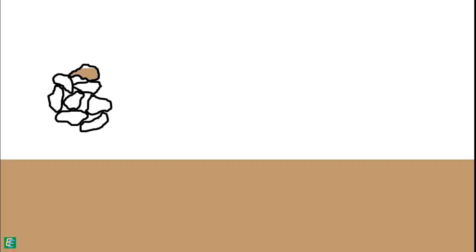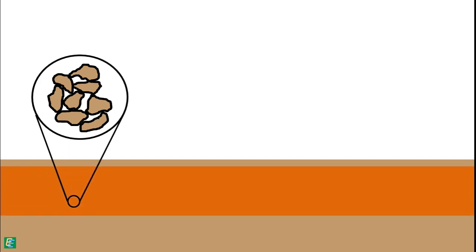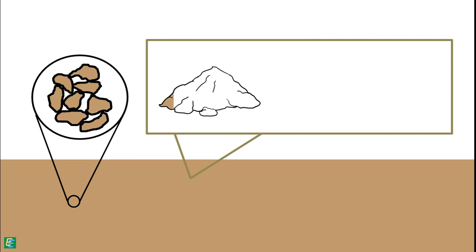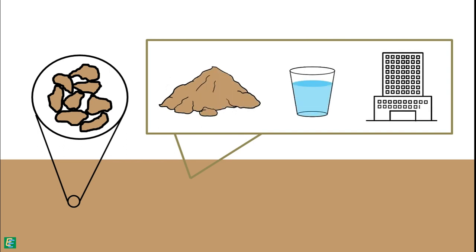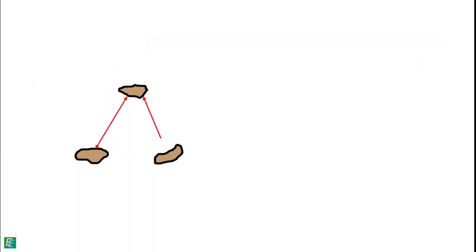Soil particles in a soil mass experience the weight of everything above them, which includes the weight of all soil particles above them, weight of water, and weight of structure if present. Because of that, soil particles experience stress between each other, which we call total stress.